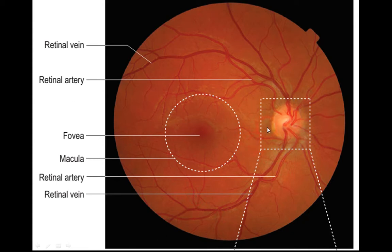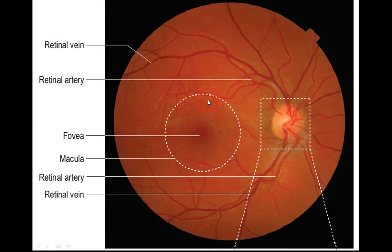In the normal fundus picture, this is the optic disc and this is the macula, which has a central depression called the fovea. The macula appears darker compared to other areas of the fundus because it is thinner — when light is shone, the underlying choroid reflects back. Here are the central retinal artery and central retinal vein; the artery appears thinner than the vein.